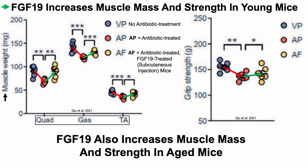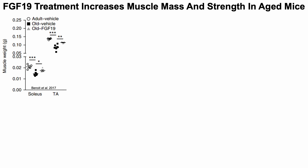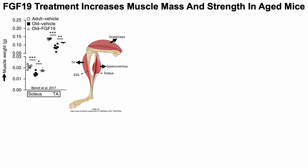What about aged mice? FGF-19 also increases muscle mass and strength in aged mice. We've got three groups looking at muscle weight for the soleus and tibialis anterior (TA): six-month-old mice (open circles), 25-month-old mice (black squares — these are old mice), and old mice treated with FGF-19. During aging there's reduced muscle mass of the soleus and TA in 25-month-old versus six-month-old mice. But in old mice treated with FGF-19, there was significantly increased muscle mass for both muscles.